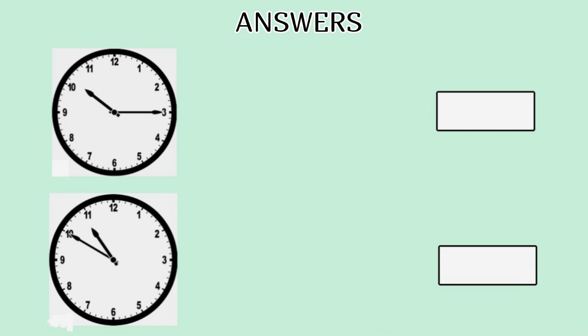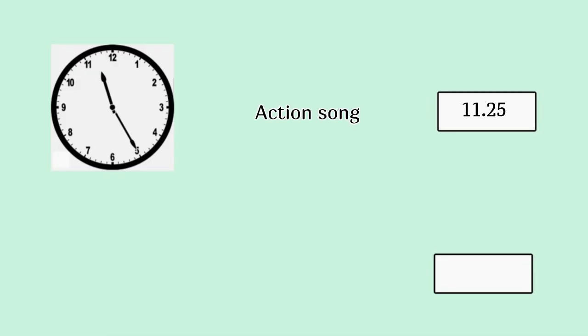Answers. Mimicry 10:15, Dance 10:50, Action song 11:25. How can you write 12:15? Quarter past 12.